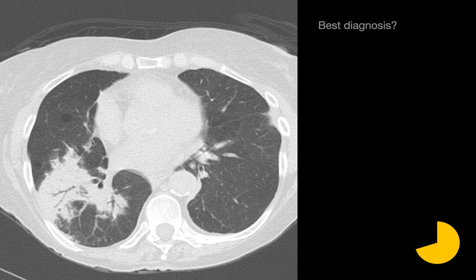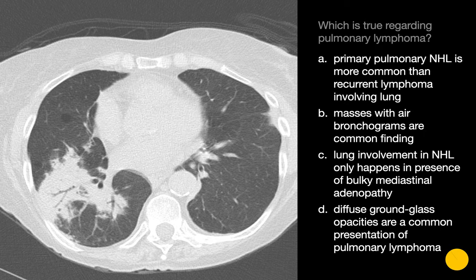What's your best guess as for its diagnosis? Honestly, any of the six items listed would have been reasonable guesses. This particular opacity happened to represent a case of pulmonary lymphoma. Which of these statements about pulmonary lymphoma is true? The true statement is that lung masses with preserved air bronchograms are a common finding when pulmonary lymphoma occurs. Primary pulmonary non-Hodgkin's lymphoma is rare, happening in only 0.4% of all lymphomas. Secondary involvement of the lung in patients with a history of lymphoma is more frequent, however, with an incidence of 25-40%.